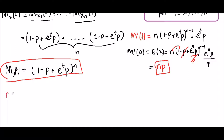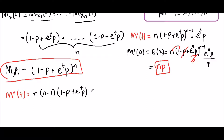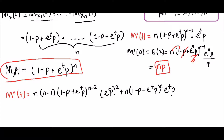For the variance, we first need to find the second moment. The second moment is obtained by taking the derivative of the first derivative. If we take the derivative again, we obtain n times (n minus 1) using the power rule, times (1 minus p plus e^t · p)^(n−2), times the derivative of the inside. This is the second derivative.